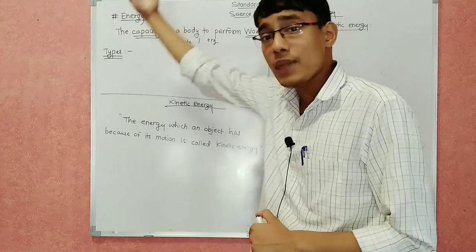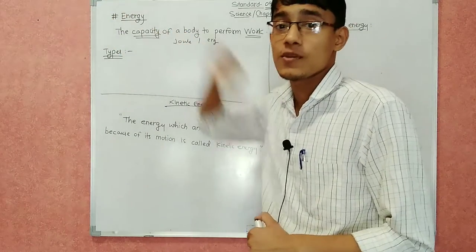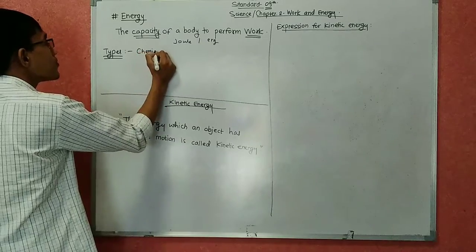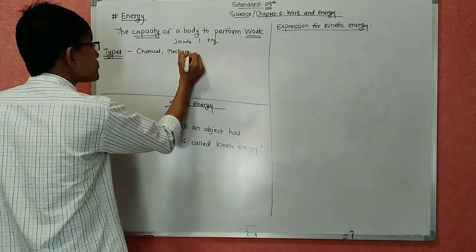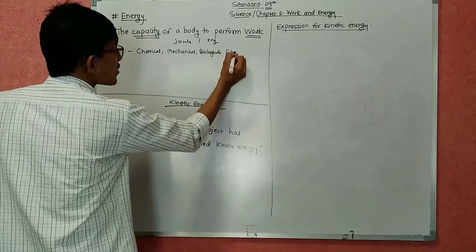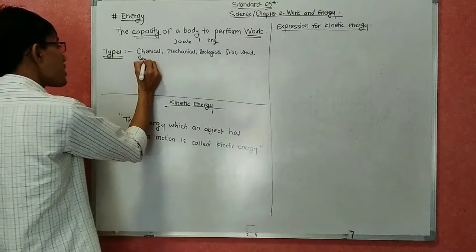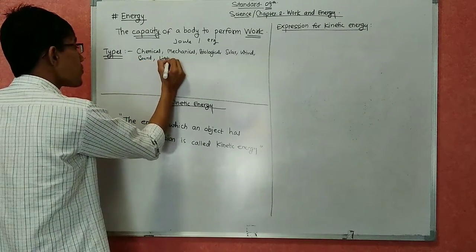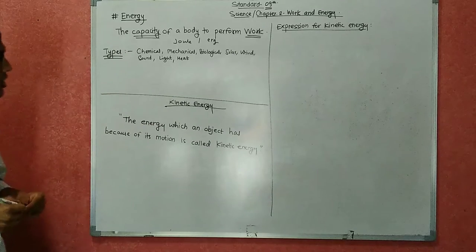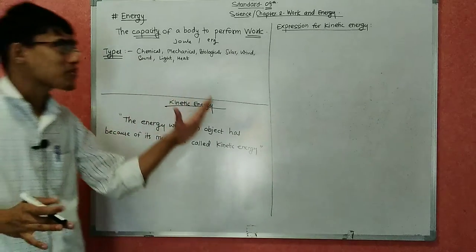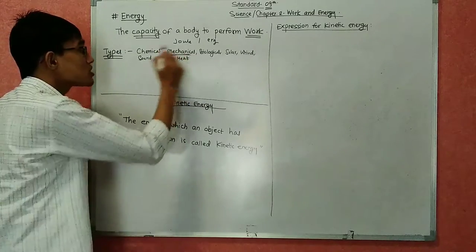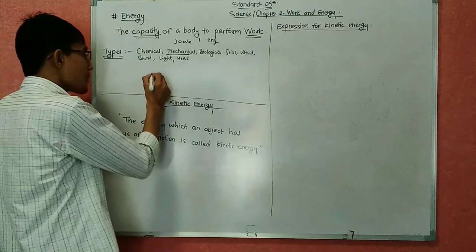Energy is required for performing any work, so there are many types of work and many types of energies. For example, there is chemical energy, mechanical energy, biological energy, solar energy, wind energy, sound energy, light energy, and heat energy. So there are many types of energy, and in this particular chapter we are going to deal with two types of mechanical energy.